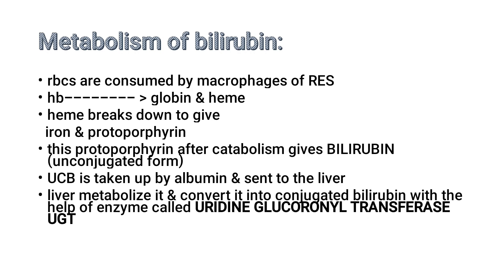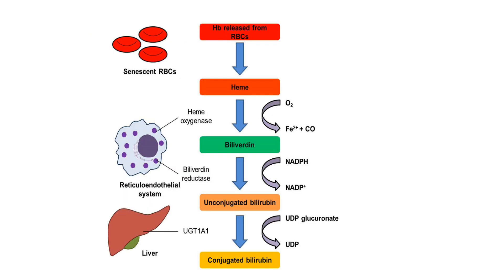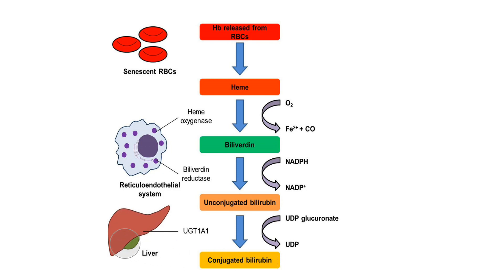This unconjugated bilirubin is taken up by albumin and sent to the liver, where the liver plays its role. The liver metabolizes it and converts it into conjugated bilirubin with the help of the enzyme uridine glucuronyl transferase, or UGT. In the pictorial representation, you can see the hemoglobin released from RBCs; the heme is converted into bilirubin, and then unconjugated bilirubin is converted into conjugated bilirubin in the liver with the help of UGT.